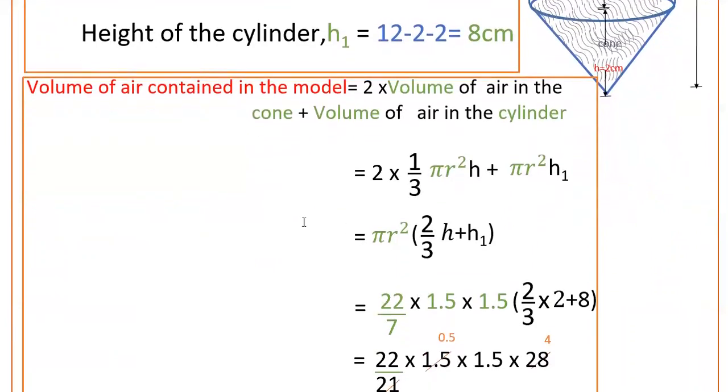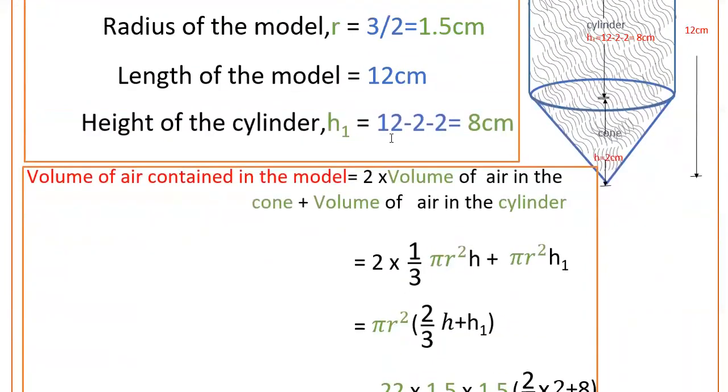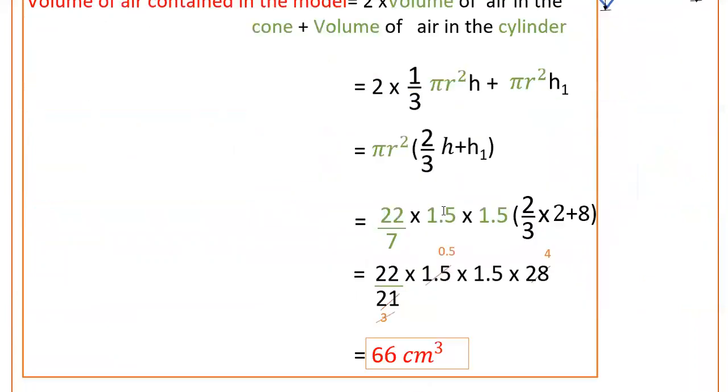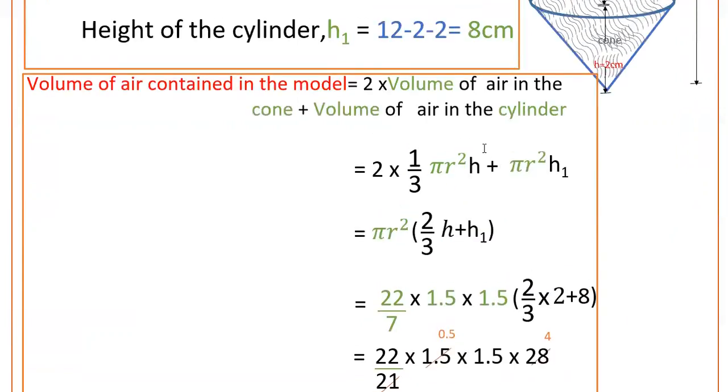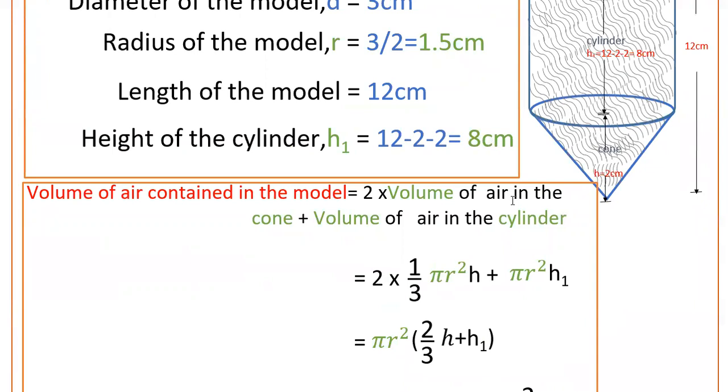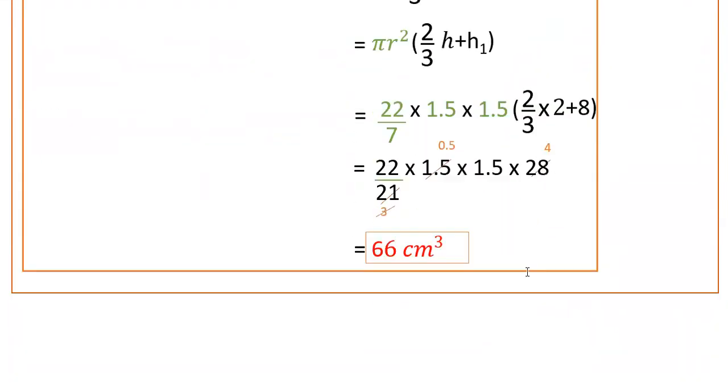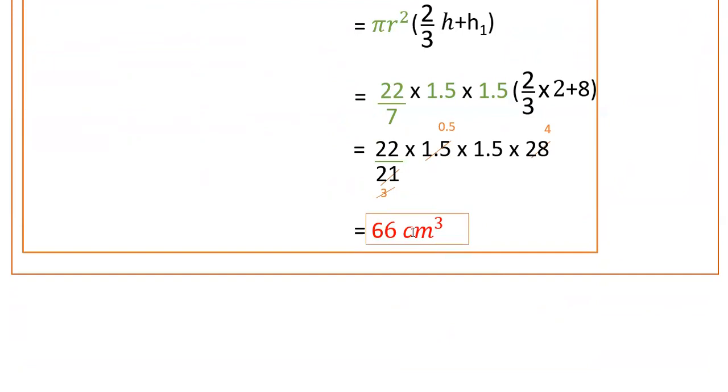Now substitute the values here. Here pi r square is common, so take out pi r square, then 2 by 3 into h plus h1. So pi value is 22 by 7 into r is 1.5, so 1.5 into 1.5 into 2 by 3 into h is 2, height of the cone, plus h1 is height of the cylinder that is 8 centimeters.